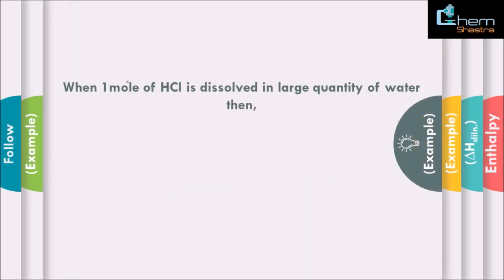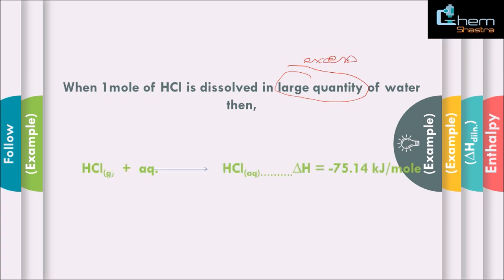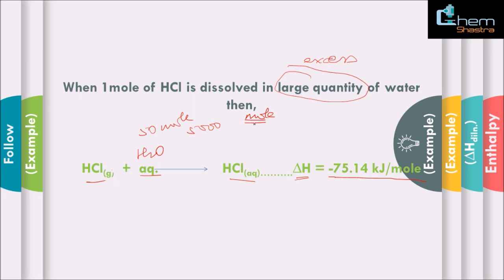Now suppose instead of 50 moles, I dissolve one mole of HCl gas in a large quantity of water — excess water — going for infinite dilution. Here I am adding HCl in the gaseous state to the aqueous phase. The delta H for this process comes out to be minus 75.14 kJ per mole. Whenever you talk about a change in enthalpy, you always express it per mole — for only 1 mole. So if you have 2 moles, the whole equation is multiplied by 2. This value of minus 75.14 kJ per mole is for 1 mole of HCl gas.